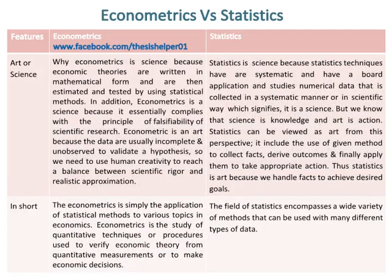Econometrics is a science because economic theories are written in mathematical form and are then estimated and tested using statistical methods. Additionally, econometrics complies with the principle of falsifiability of scientific research. Econometrics is also an art because the data are usually incomplete and unobserved, so human creativity is needed to reach a balance between scientific rigor and realistic approximation.